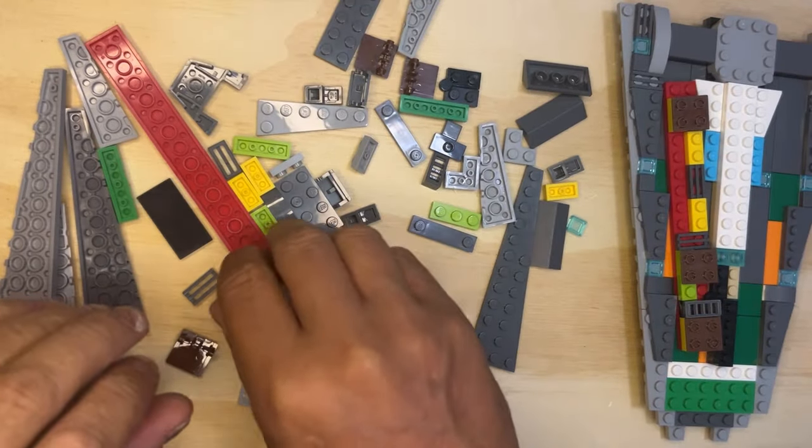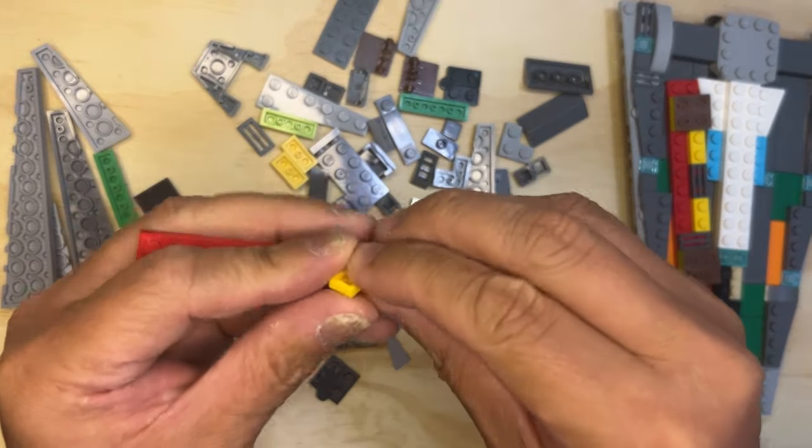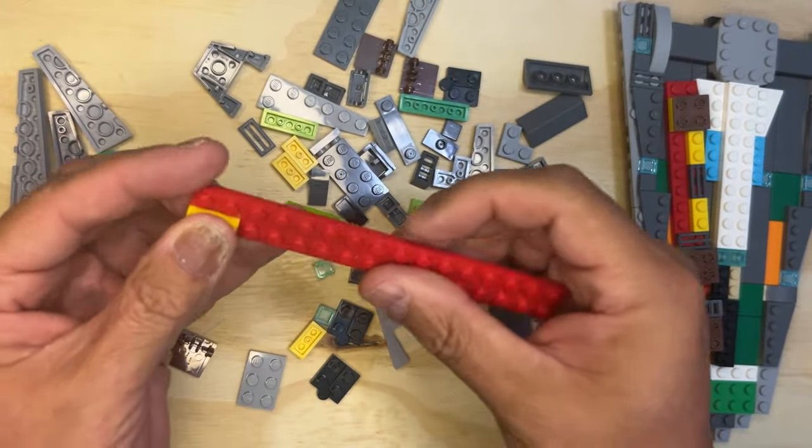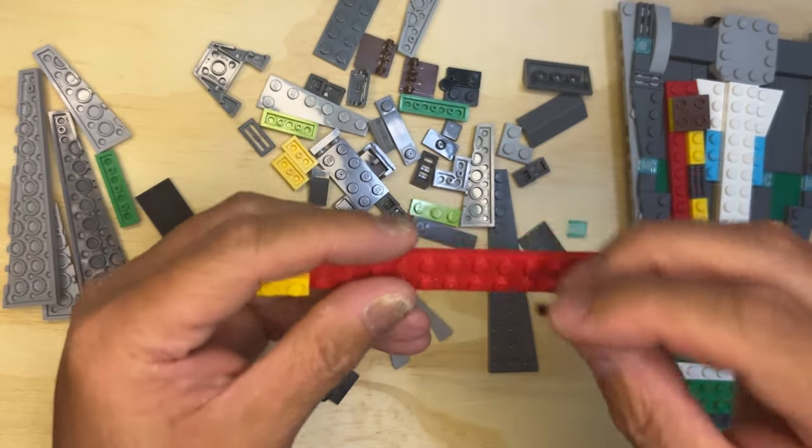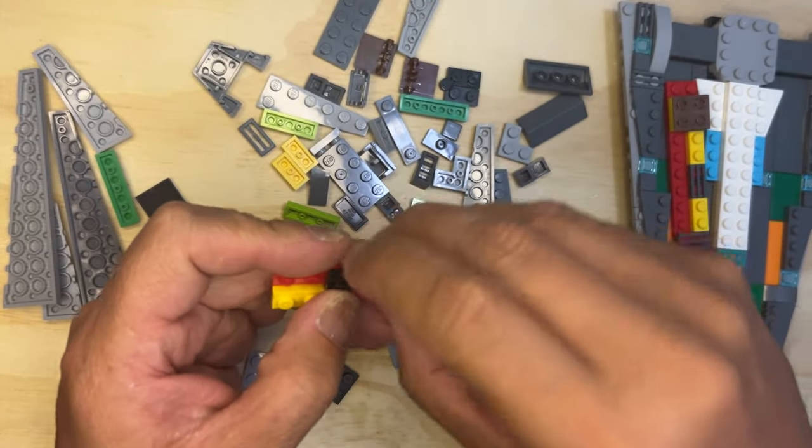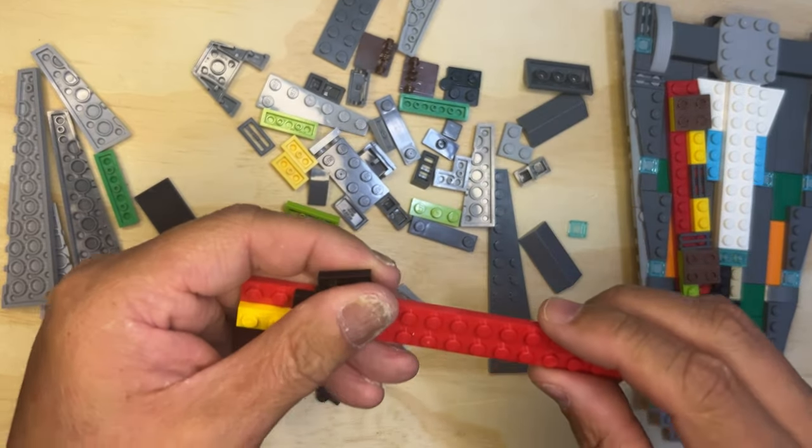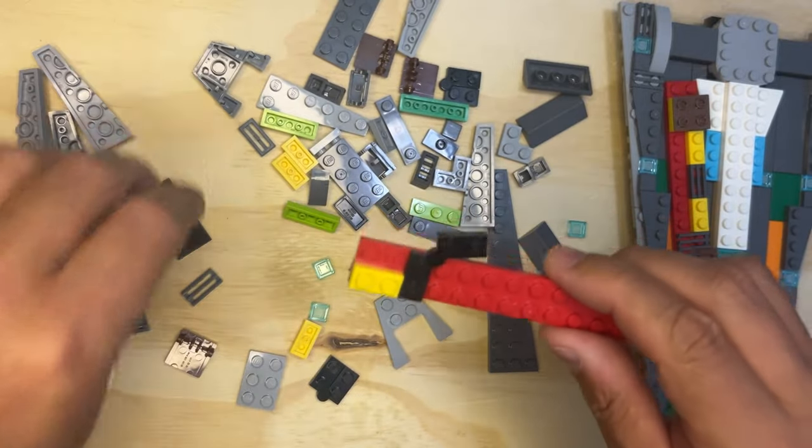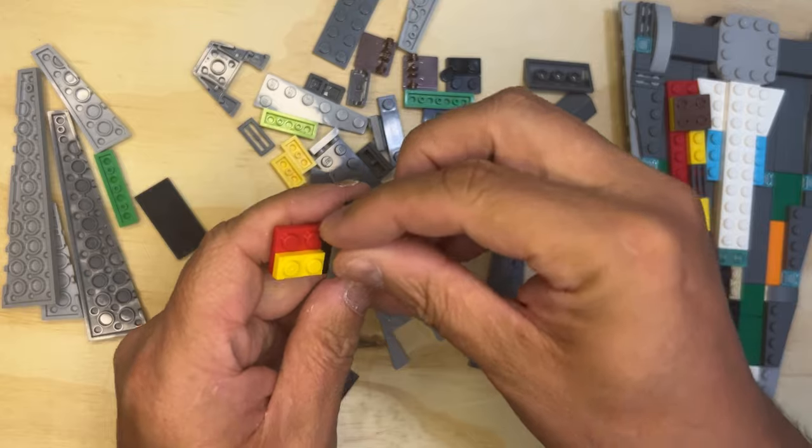Alright LEGO Fanatics, we're back. We're gonna keep going. As I always say, we're gonna keep building because it's fun to build. I've got so many things to build. You've seen my LEGO room, it's a little bit disarrayed right now and I need to actually go through and clean some of this stuff up, but we're gonna keep going.